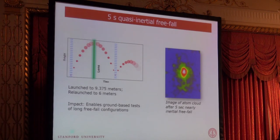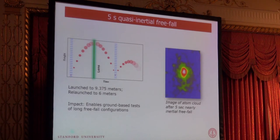Here's a technological thing you can do once we can refocus the atoms with that pulse of light: we can launch the atoms, capture them in the lattice, and launch them again. We realized about five seconds of quasi-inertial freefall. There was one rather violent period where the atom cloud was caught and re-accelerated, lasting about 20 milliseconds, but otherwise the atom is just bouncing along the tube. We hope to get more bounces by improving the efficiency of the catch and relaunch.